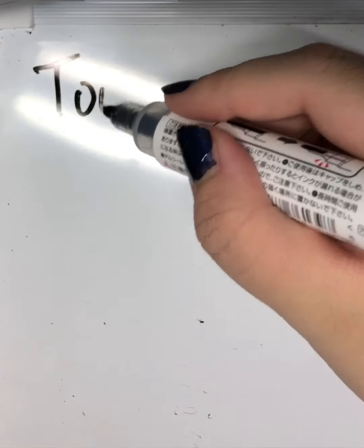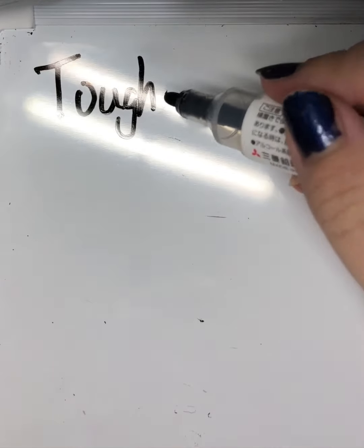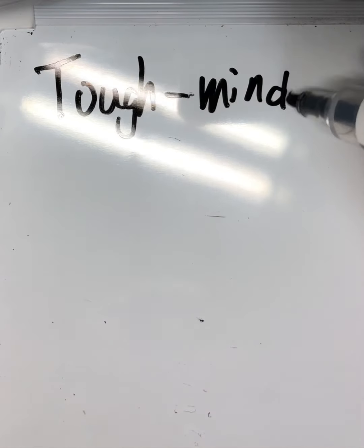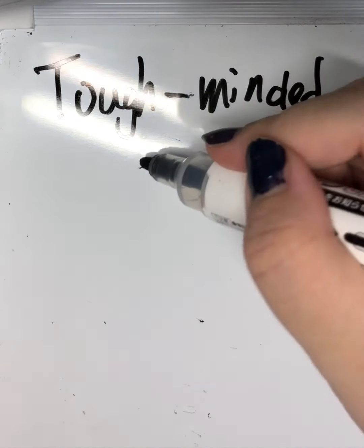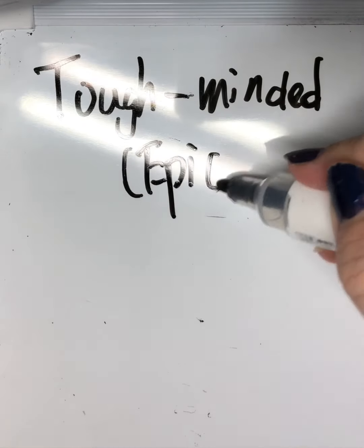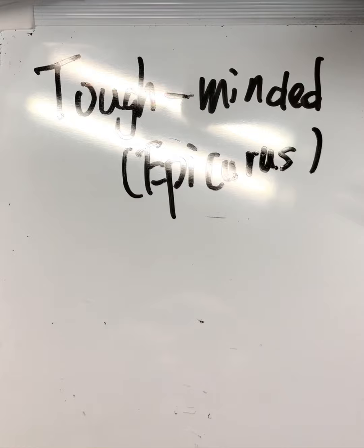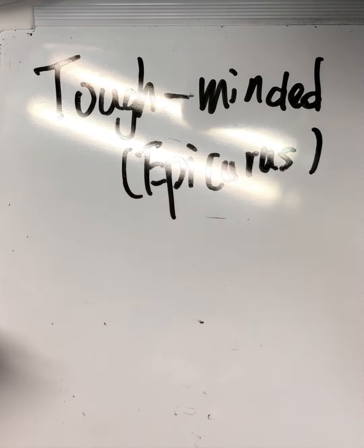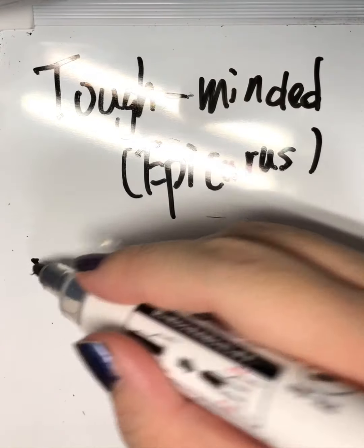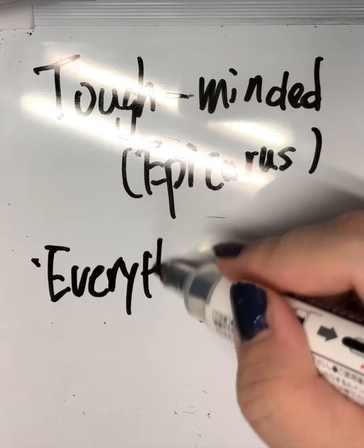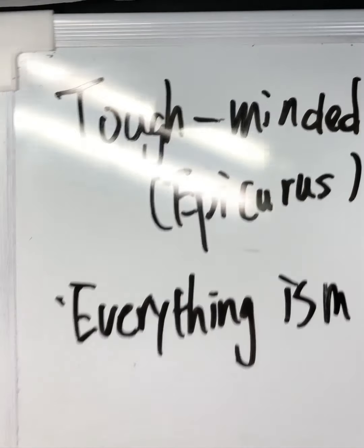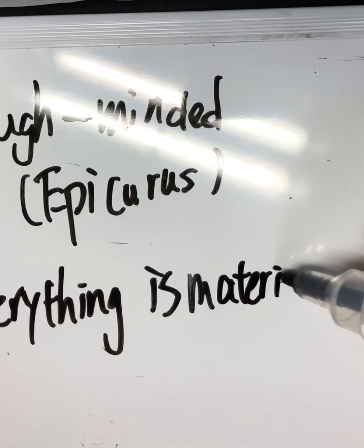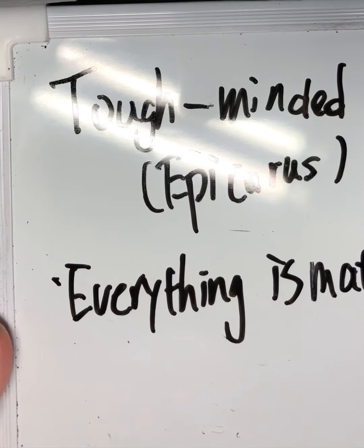Tough-minded. The original tough-minded philosopher was Epicurus. Tough-minded people think everything is material. It is called materialism.